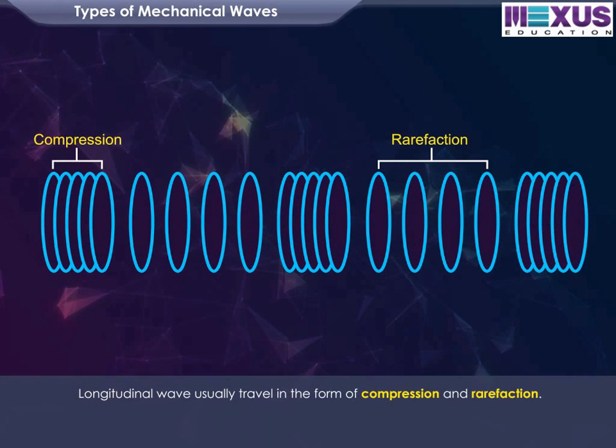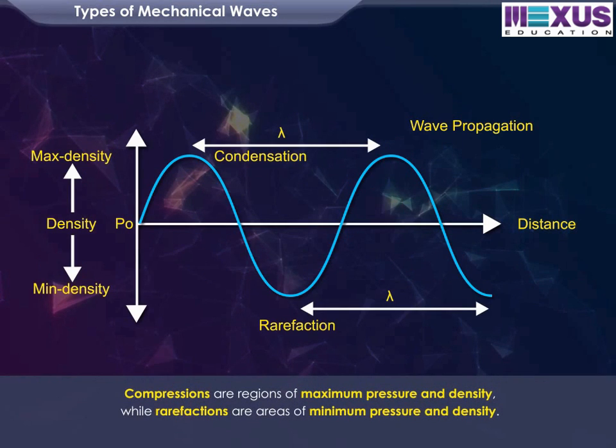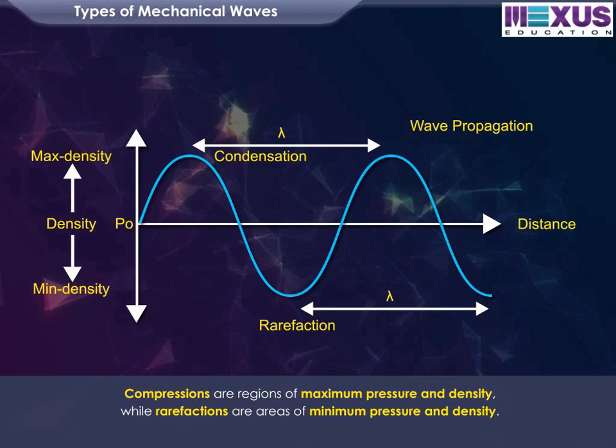Longitudinal waves usually travel in the form of compressions and rarefactions. Compressions are regions of maximum pressure and density, while rarefactions are areas of minimum pressure and density.